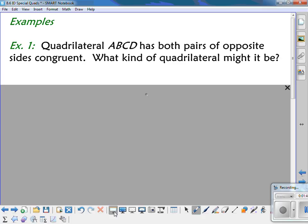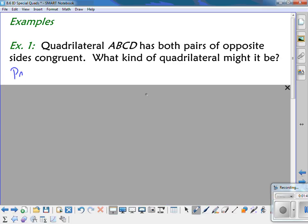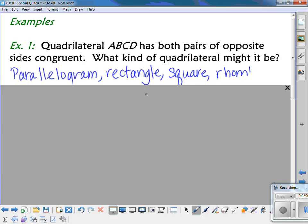It's not going to be a kite, because the opposite sides aren't congruent on a kite. But it could be a parallelogram. It could also be a rectangle, or a square, or a rhombus. All four of those have both pairs of opposite sides that are congruent.